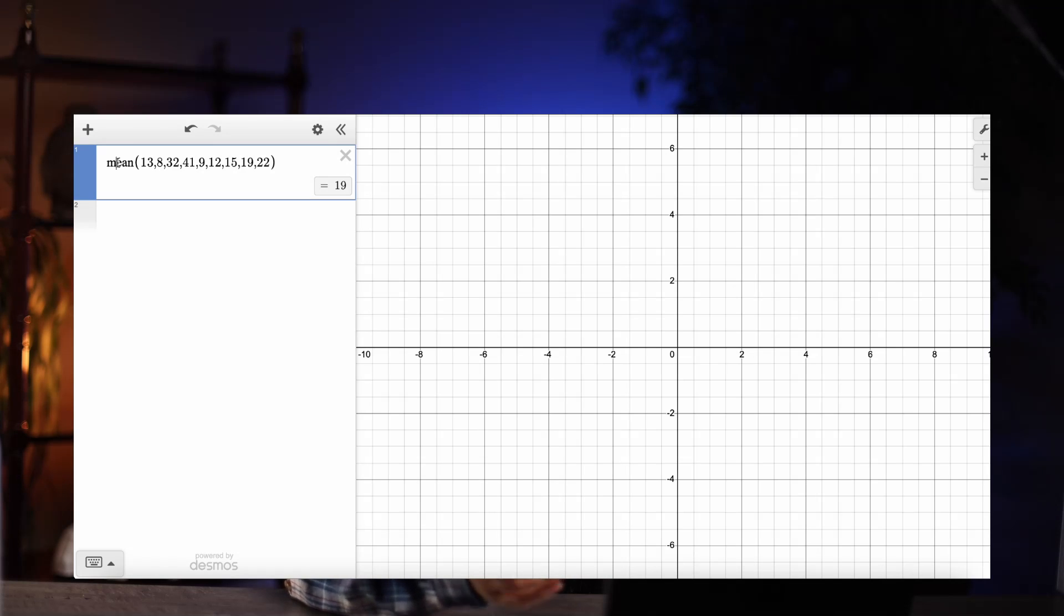Same concept applies for finding the median. We can just type in median and then in parentheses, we're going to insert the data set. As you can see, it spits out the number 15.